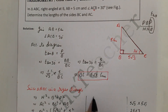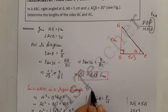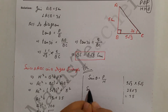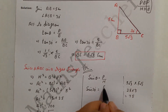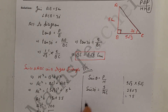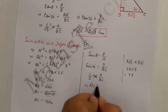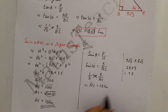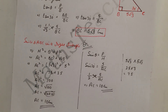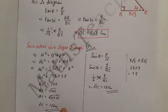Alternatively, we can find AC using sin theta, where sin theta equals Perpendicular upon Hypotenuse (P/H). With theta equal to 30 degrees, sin 30° equals AB/AC. Sin 30° is 1/2, so 1/2 = 5/AC. Cross-multiplying: AC × 1 = 5 × 2 = 10. Both methods give the same value, confirming AC equals 10 cm.